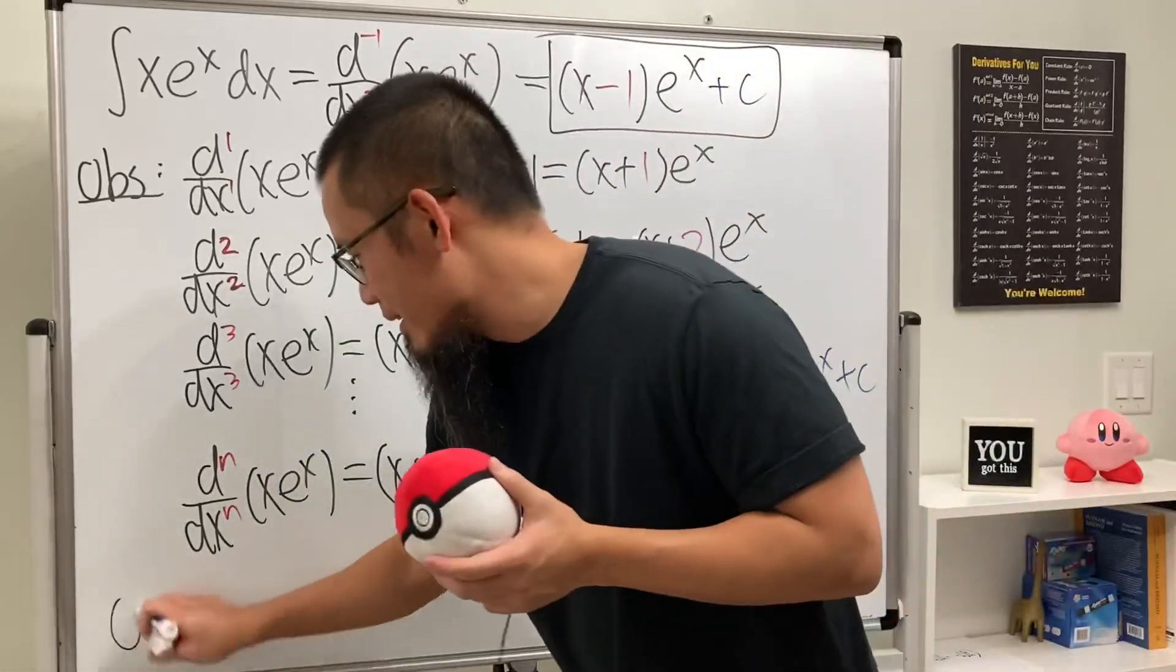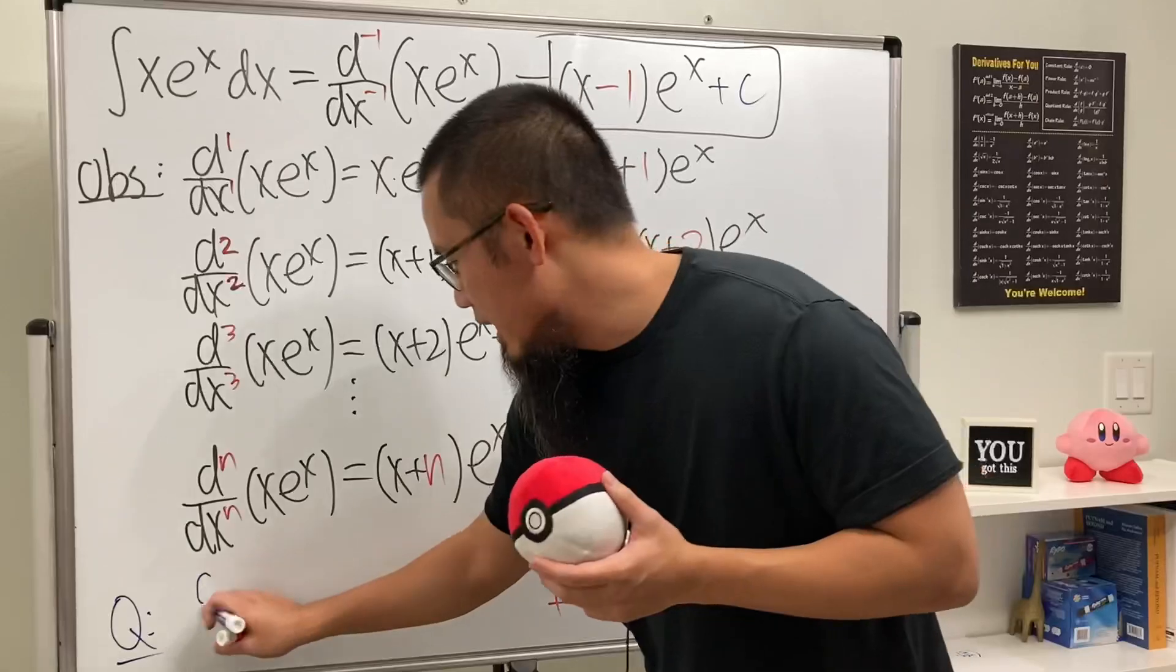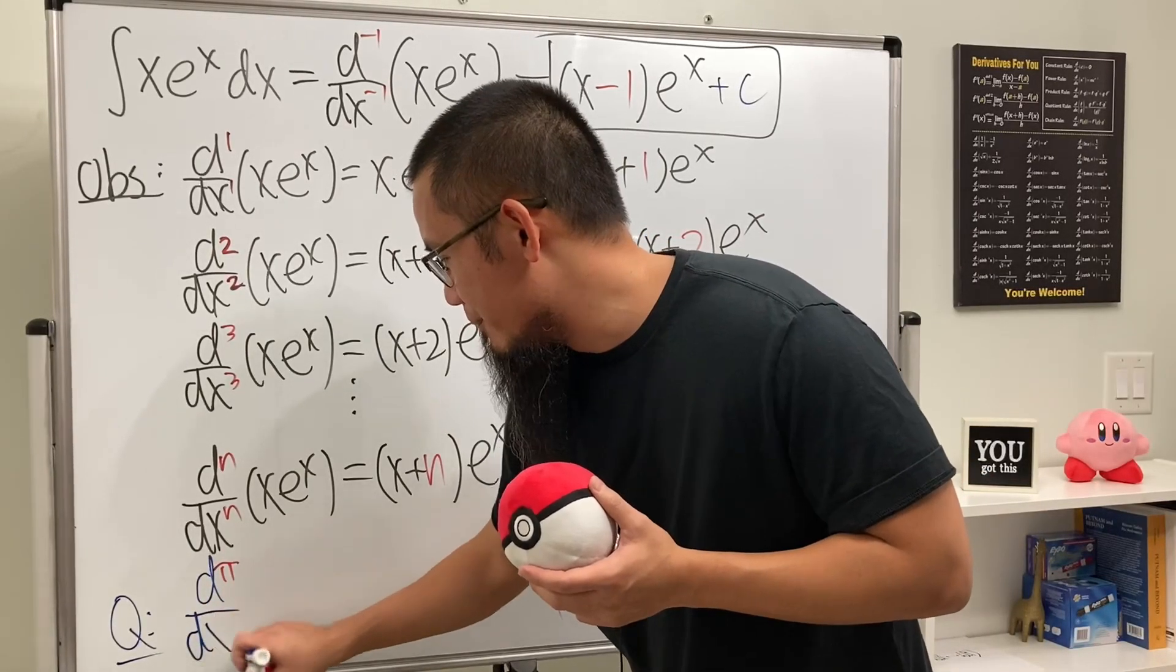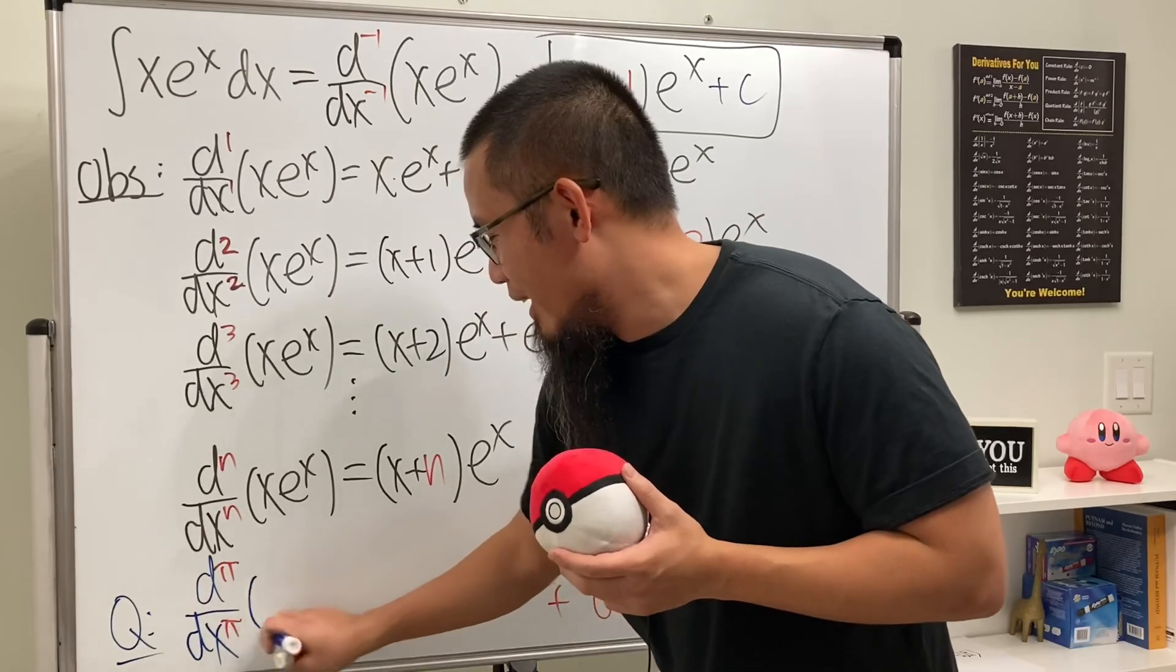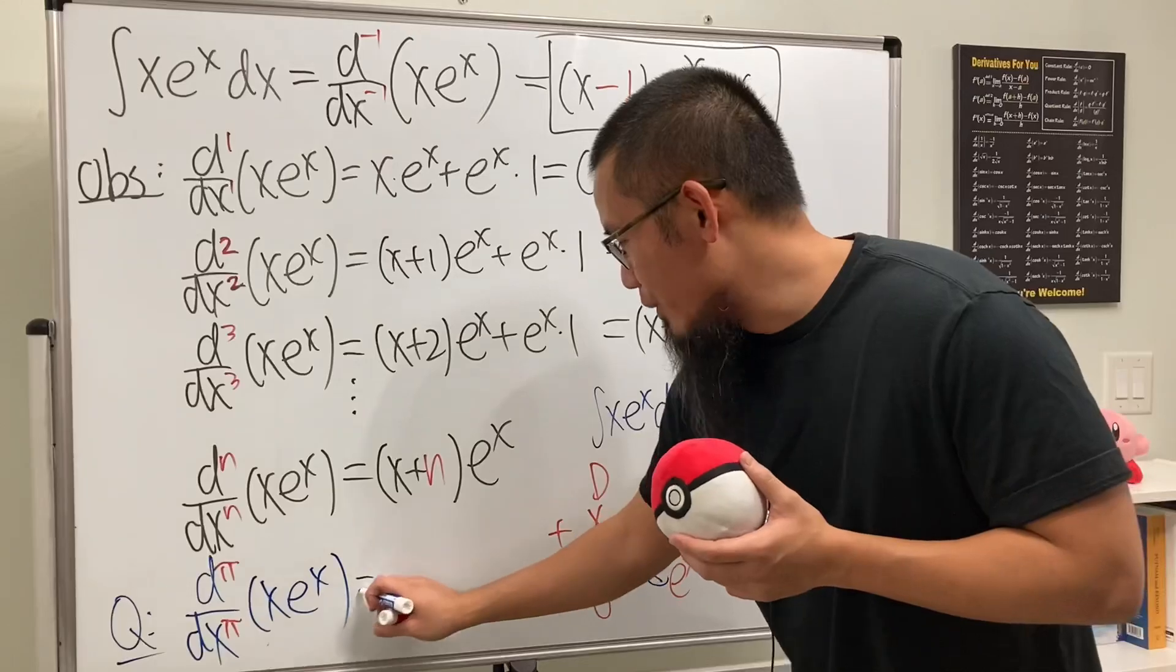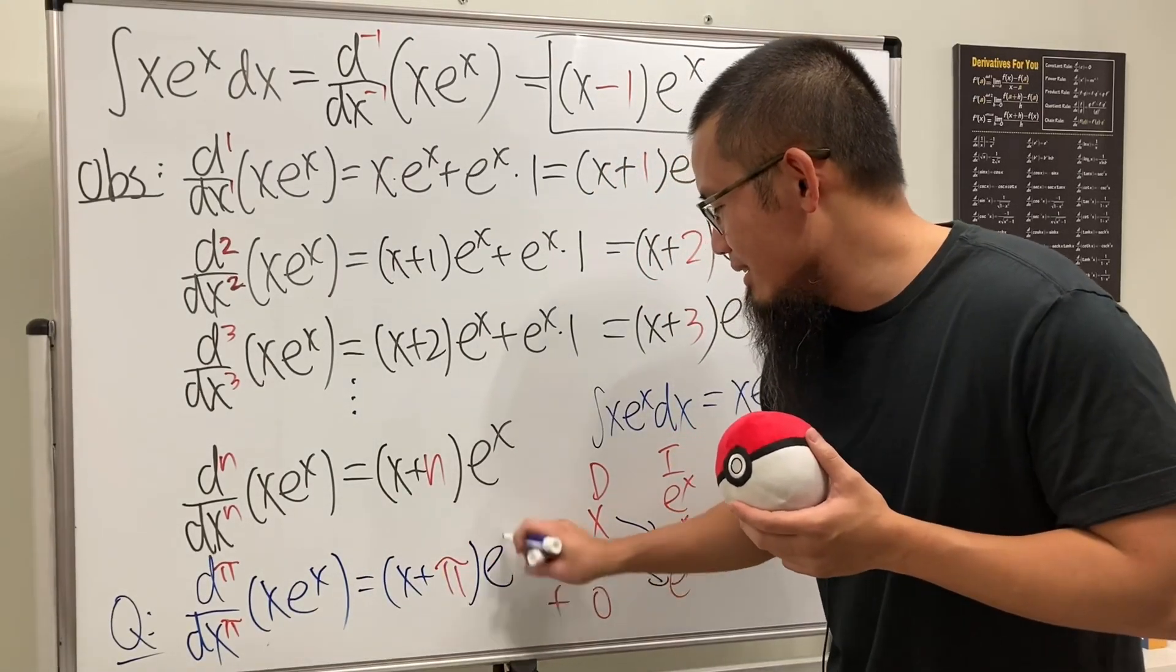And now, a little question before you guys go. What if we put down some weird number for n? Let's see. What if we have pi right here, meaning the pi's derivative of x times e^x? Do we really just end up with x+π times e^x?